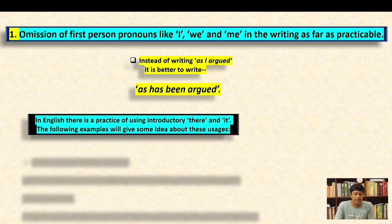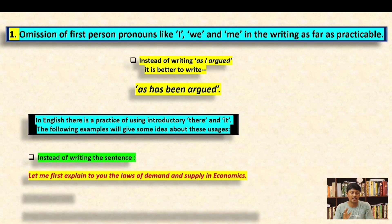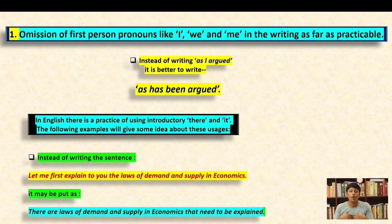In English there is a practice of using introductory 'there' and 'it.' For example, instead of writing 'Let me first explain to you the laws of demand and supply in economics,' it may be put as: 'There are laws of demand and supply in economics that need to be explained.' So you can understand that I, we, and me in the writing should be omitted to create a good piece of writing.